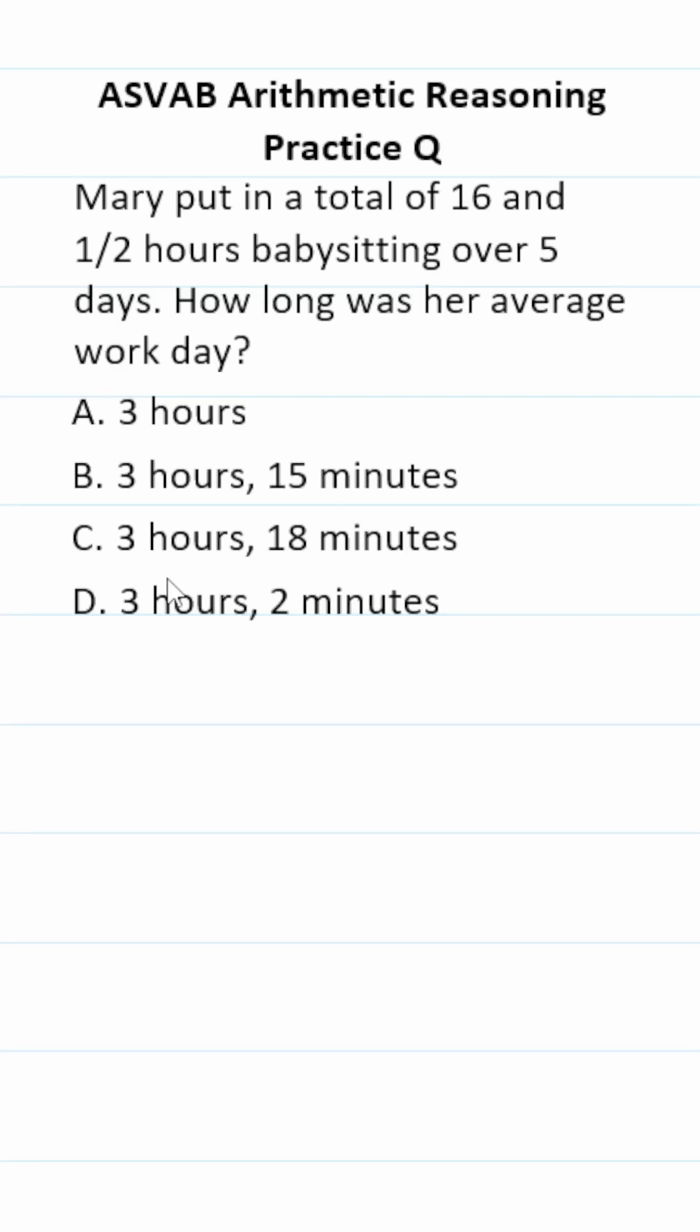This ASVAB arithmetic reasoning practice test question, we have to do 16 and one half divided by five. Let's convert 16 and a half to an improper fraction. 16 times two is 32 plus one is going to be 33 over two divided by five.